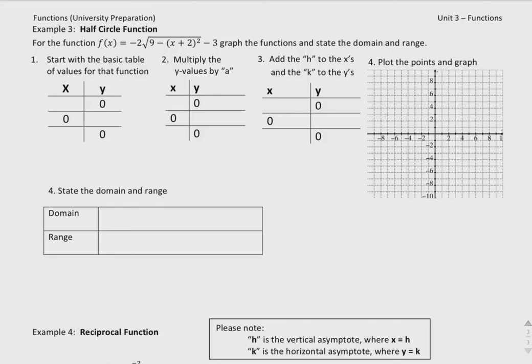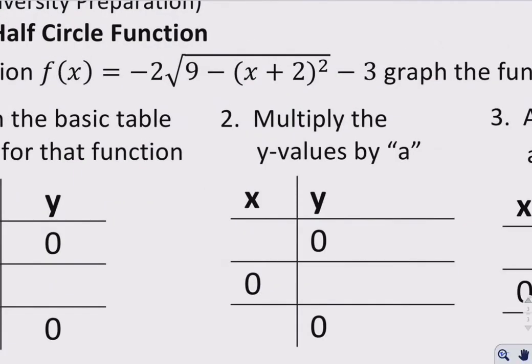Okay, in our next example, we're looking at the half circle function. Now, in this case, our radius is not 9, but the square root of 9, which is equal to 3.